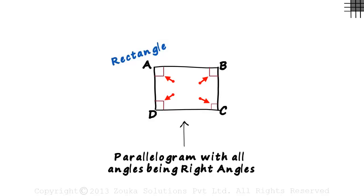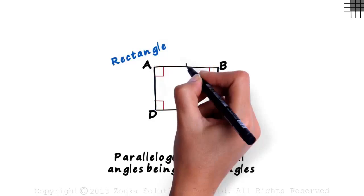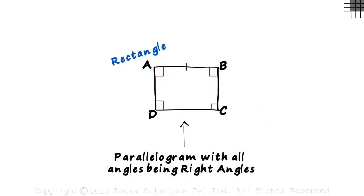Why is it special? All the angles in this quadrilateral are right angles. This special case of a parallelogram is called a rectangle — it is a parallelogram with all angles being right angles. Just like in a parallelogram, the opposite sides of a rectangle are equal: this side equals this side, and this side equals this one.